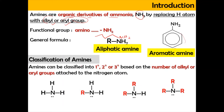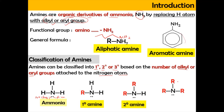Now we're going to look into the classification of amines. Amines can be classified into primary, secondary, or tertiary, based on the number of alkyl or aryl groups attached to the nitrogen atom. Ammonia has no alkyl group attached, so there is no classification. When the amino group is attached with one alkyl group, it is a primary amine. Two alkyl groups gives a secondary amine, and three alkyl groups gives a tertiary amine.